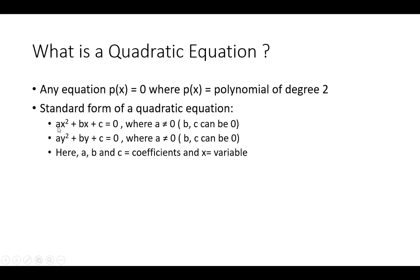The coefficient here is 'a'. If the value of 'a' is 0, then the x² term will vanish. Because 0 multiplied by something is 0. So the value of 'a' is always non-zero.